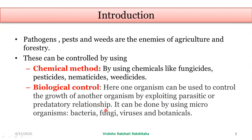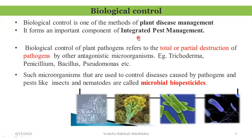Biological control can also be done using microorganisms like bacteria, fungi and viruses, and also by using botanicals. Biological control is one of the methods of plant disease management and forms an important component of integrated pest management. Now, what is actually biological control?